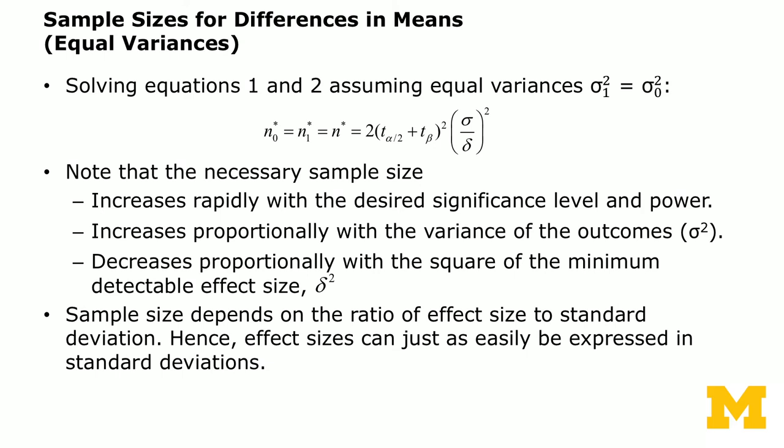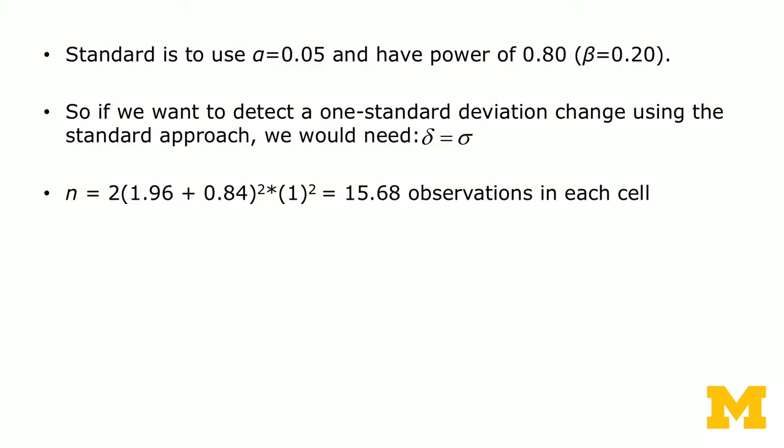The sample size depends on the ratio of effect size to standard deviation — the sigma-delta ratio — as well as the significance level alpha and beta set ahead of time. If you don't have pilot data, you simply need to set the sigma-delta ratios, expressing the effect size in standard deviations.